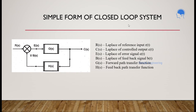Let us see a simple form of a closed loop system. We have G(s) and H(s): G(s) is the forward path transfer function and H(s) is the feedback path transfer function. We have an error detection or summing point. The input is represented as R(s), and from the summing point we have E(s) which is given as input to G(s). The final output is C(s), which is fed back to the input section through feedback and given to the summing point as B(s). R(s) is the Laplace of the reference input R(t); C(s) is the Laplace of output C(t); E(s) is the Laplace of the error signal E(t); and B(s) is the Laplace of the feedback signal B(t).